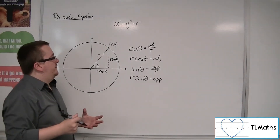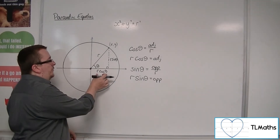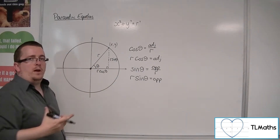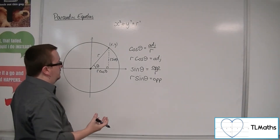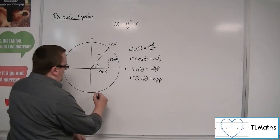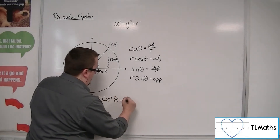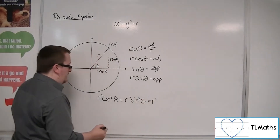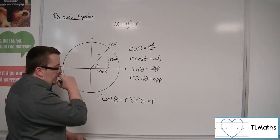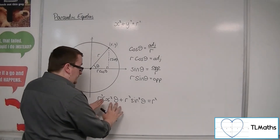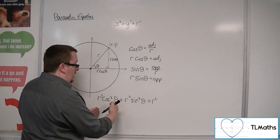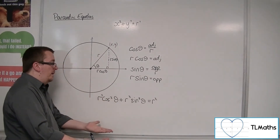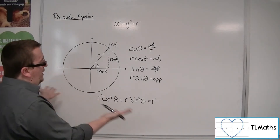So effectively, we know that r squared cos squared theta plus r squared sin squared theta equals r squared. Because you can then factor the r squared out, divide both sides by r squared, and you get the identity cos squared plus sin squared equals 1. So they are synonymous.